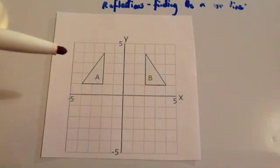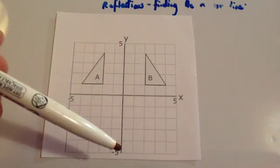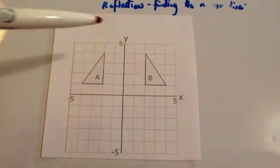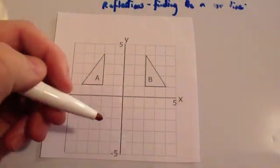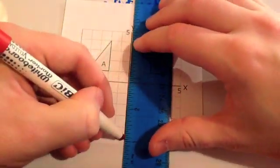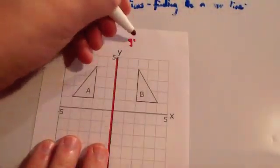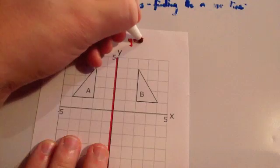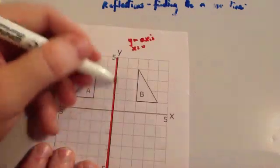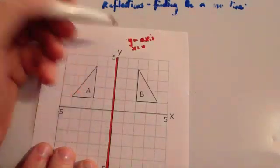Here's another question asking us to find the mirror line. Looking at it, you can see the mirror line is already there — the y-axis is in the middle of the object and the image. You could either state its equation as 'the y-axis' or as 'x equals 0', since all horizontal positions are 0 and only the heights change.